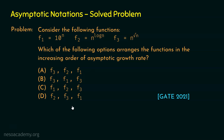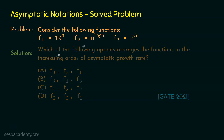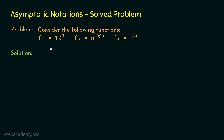In order to find the correct option, we need to compare these functions, since we need to arrange them in increasing order of asymptotic growth rate. Let's solve this problem by comparing these functions two at a time.